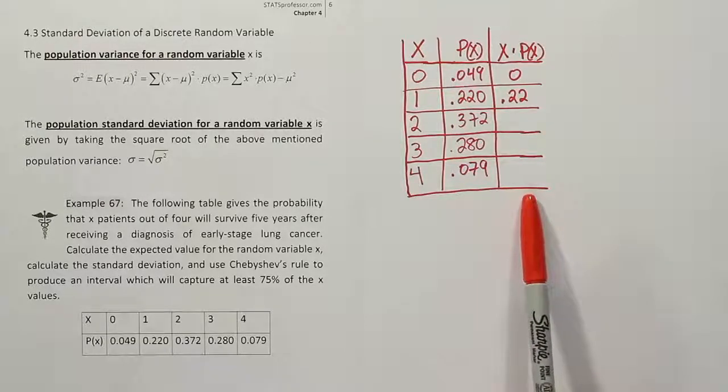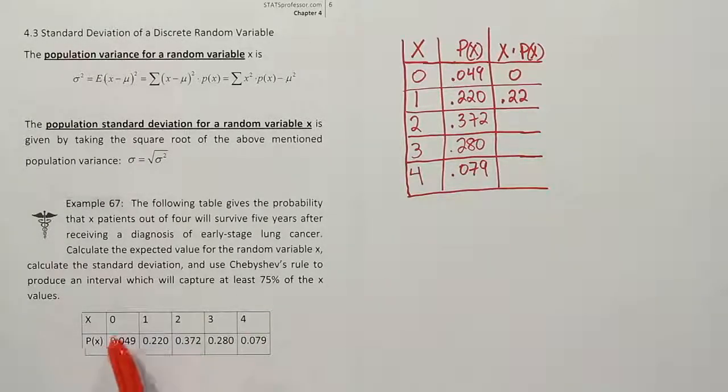Before we get to the rest of those calculations, I just want to actually just talk about how to interpret this. So remember, X here is the number of patients out of four who will end up surviving a five-year period. So the chance that none of them survive is only about 5%. The chance that all four survive is only about 8%. And then there are all the other probabilities in between. Okay, so that's what we're looking at here in this problem.